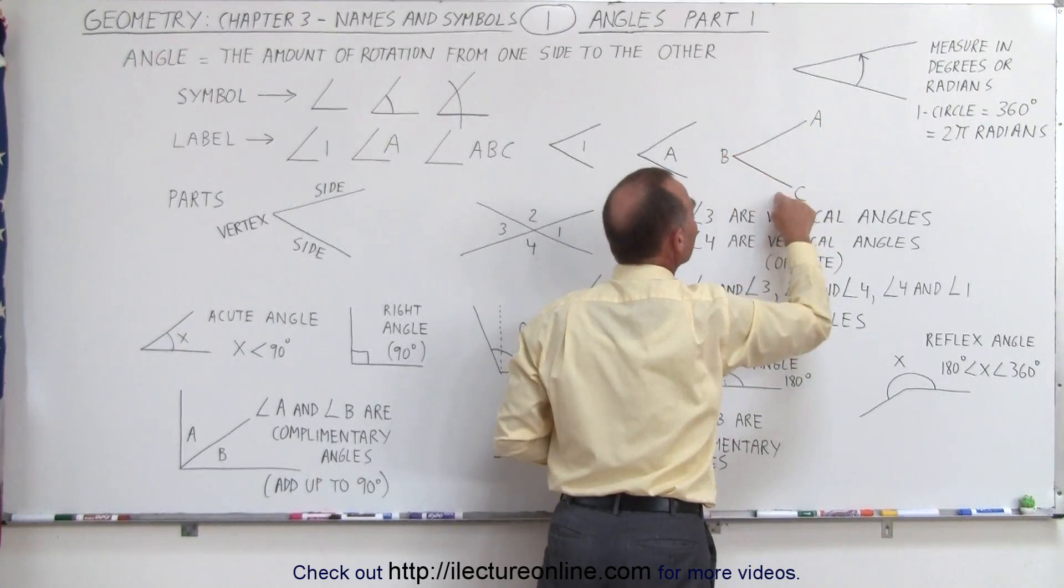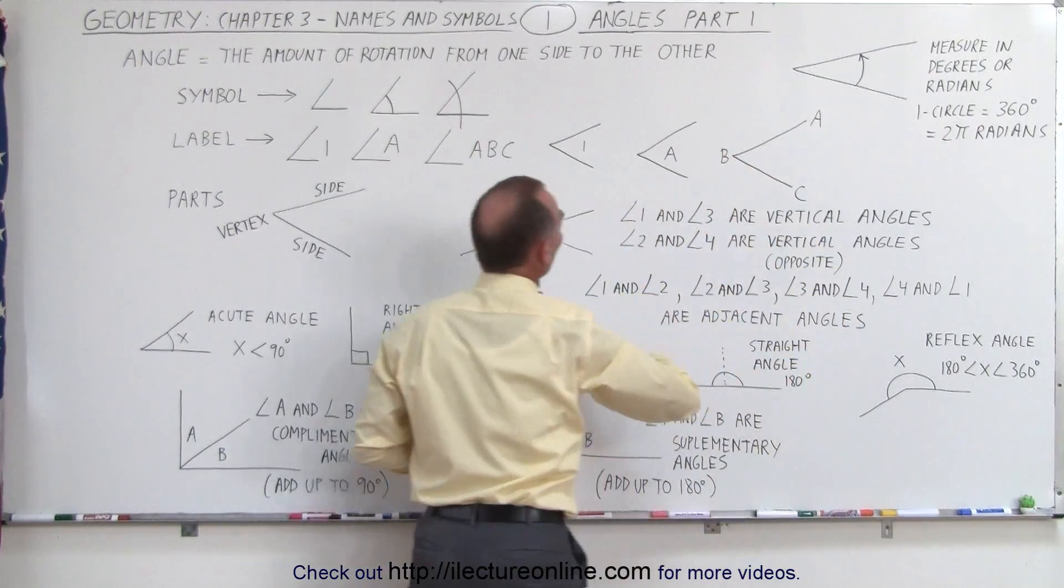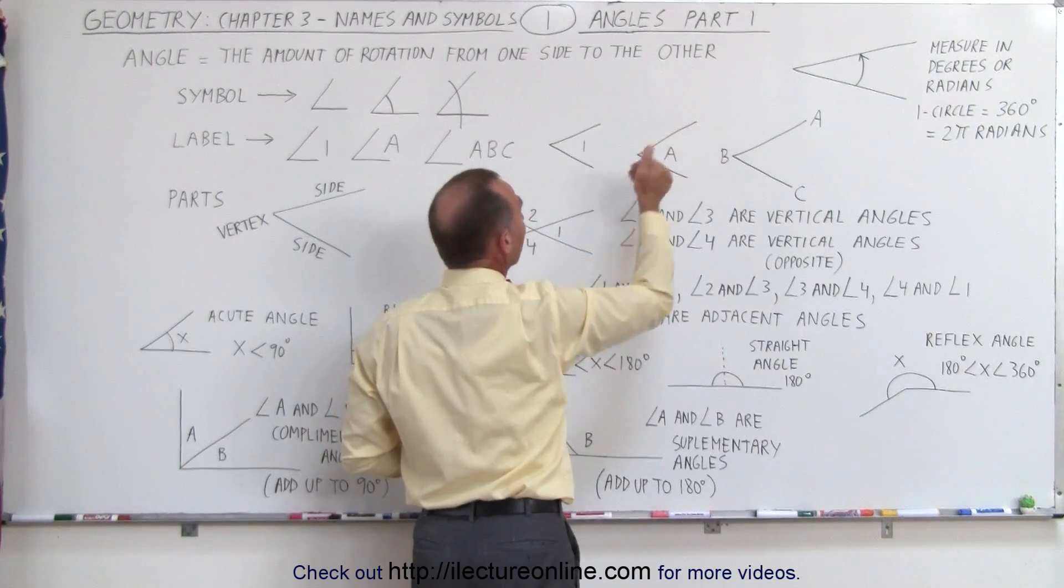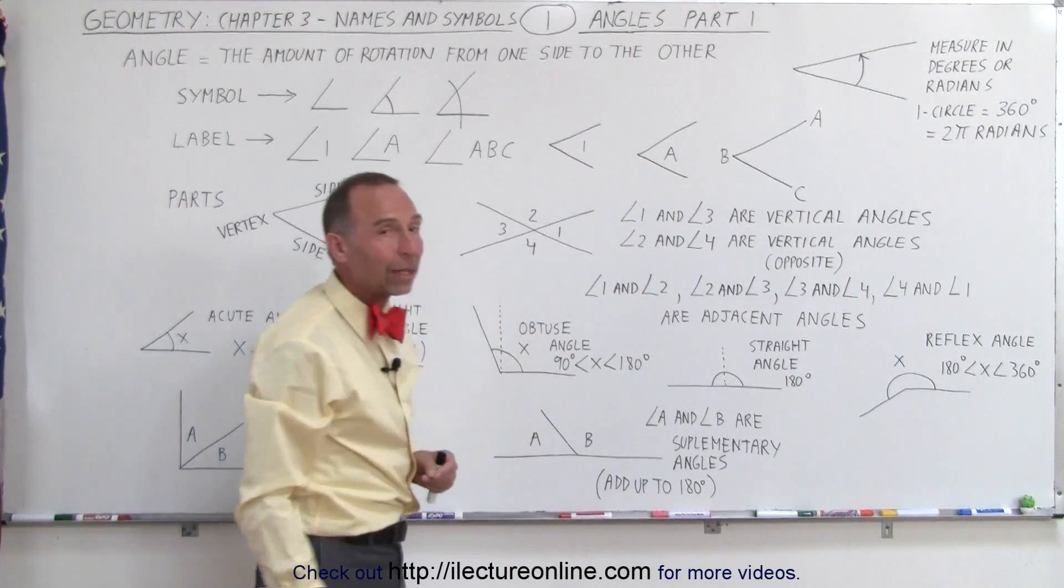So the angle ABC is sometimes expressed like this. Or we simply put a letter in there called angle A, or number in there called angle 1.